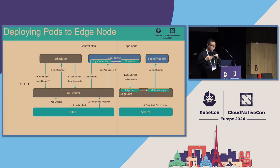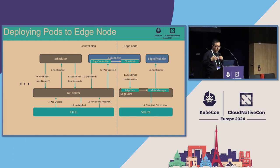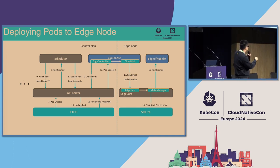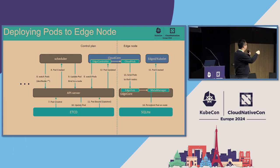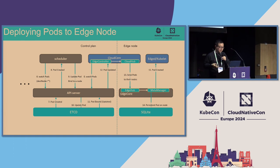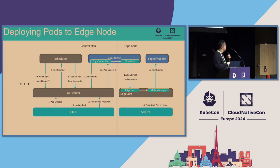This page shows the processing flow for deploying a pod from the cloud to the edge. From the left side, you can see the native Kubernetes master with the API server and ETCD. Users create a pod via the API server, the scheduler schedules it to an edge node, CloudCore sends it to EdgeCore, and then EdgeCore runs the pod on the edge node.